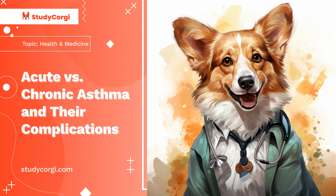Pathophysiology: Acute Asthma. Acute asthma is characterized by the inflammation and hyperresponsiveness of airways together with intermittent airflow obstruction. The mechanism of acute asthma inflammation involves mucous secretion and airway edema, which ultimately lead to the obstruction of airflow and bronchial reactivity. After the introduction of an allergen or a trigger factor, different inflammatory cells and multiple mediators function to cause the characteristic pathophysiological features of acute asthma.